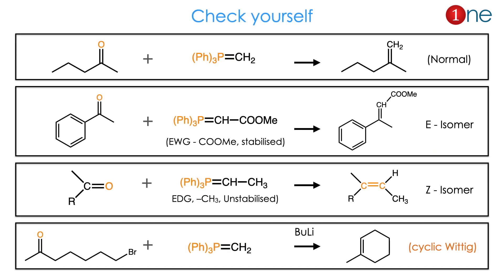Here I have given some problems to practice yourself — just check yourself through the possible combinations. If it is an electron-withdrawing group, you get the E-isomer; if it is an electron-donating group, you get the Z-isomer.